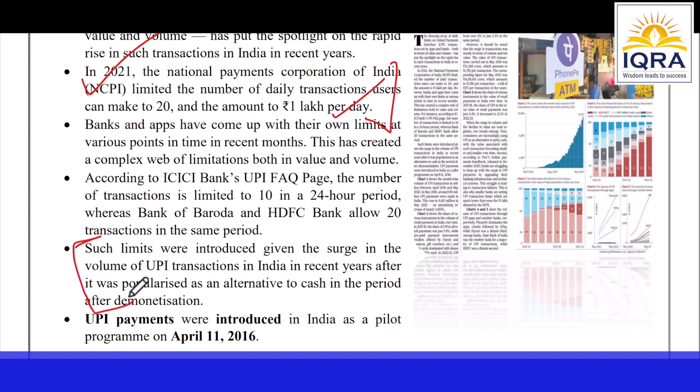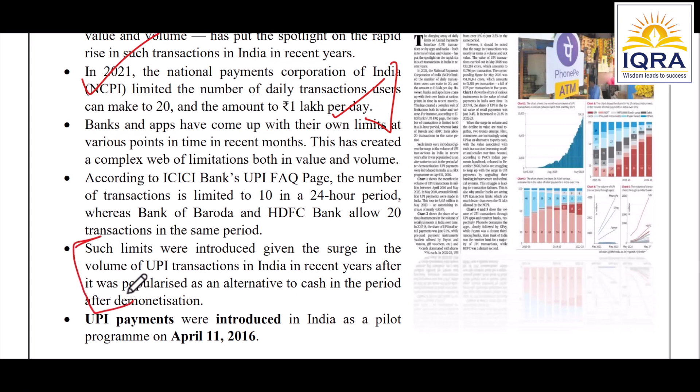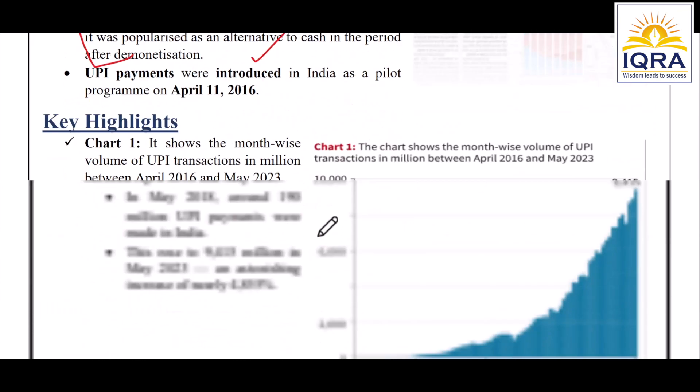The volume of transactions in India has increased in recent years because UPI became very popular — it became an alternative to cash, especially after demonetization, as people didn't prefer to keep cash. UPI was seen as a very good transaction option in India. It was introduced as a pilot program on April 11, 2016.